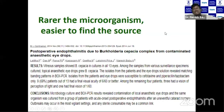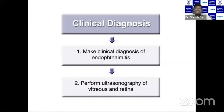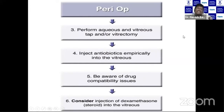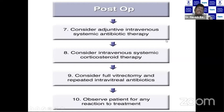In summary, endophthalmitis is a clinical diagnosis. Make a clinical diagnosis, perform ultrasonography of vitreous and retina, then perform aqueous and vitreous tap and/or vitrectomy, and inject vancomycin, ceftazidime, and dexamethasone intravitreally. Be aware of drug compatibility. Consider steroid injection only if you are sure it is not fungal endophthalmitis. Consider adjunctive intravenous antibiotics and systemic corticosteroids if inflammation is very high. Go for full vitrectomy or repeated intravitreal if not responding.